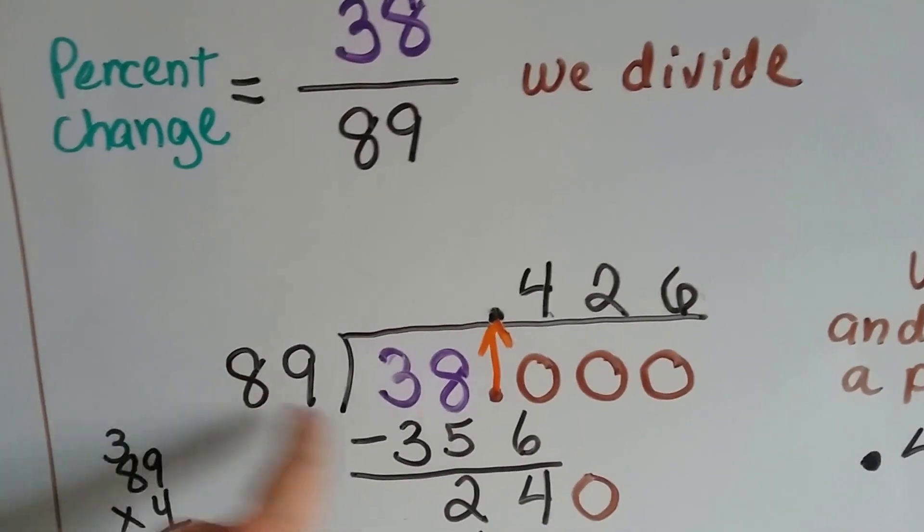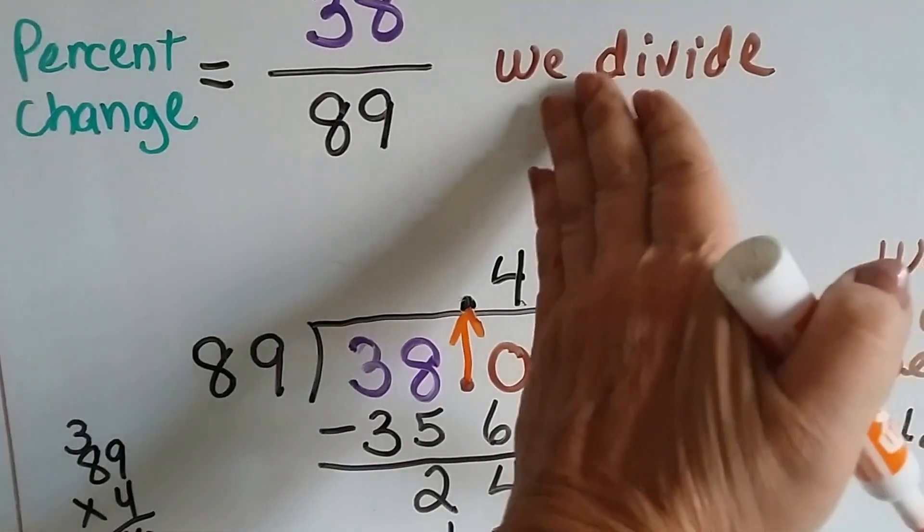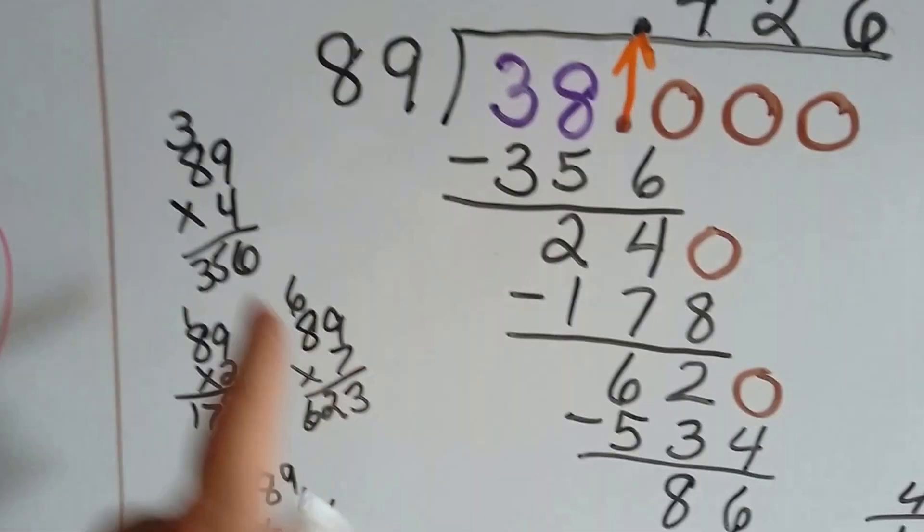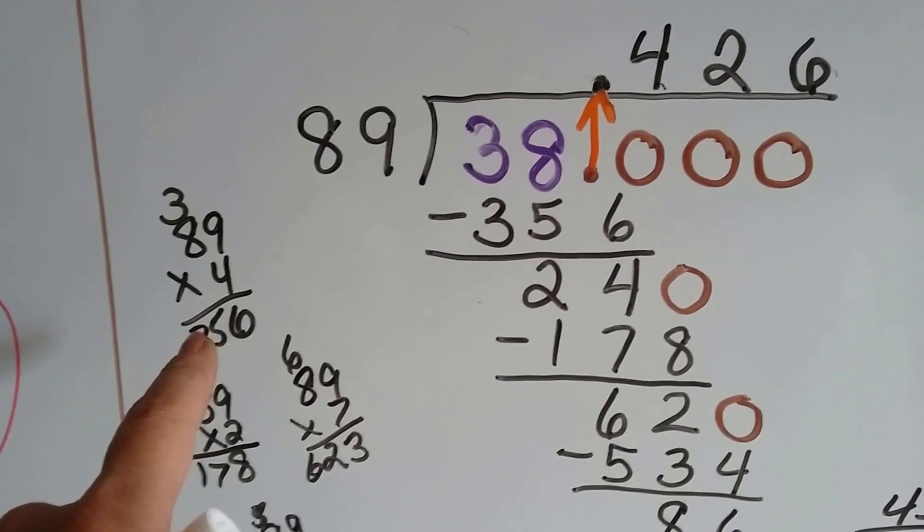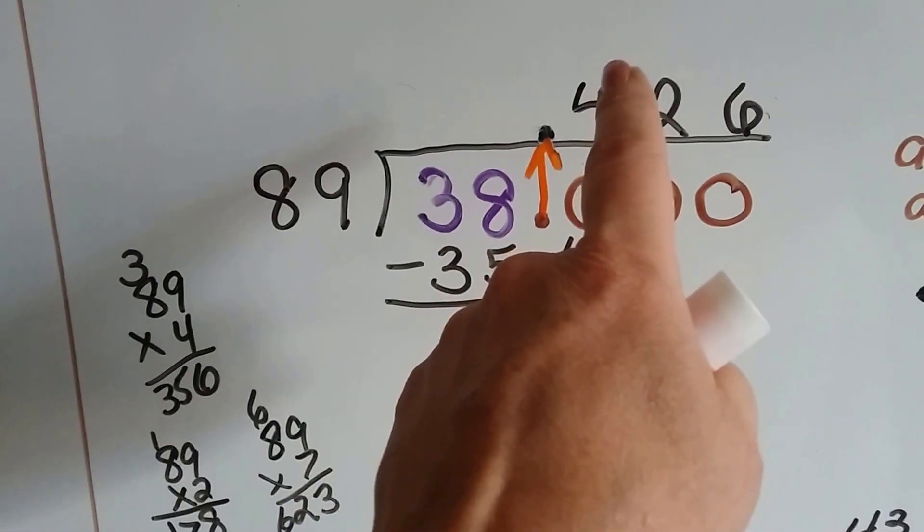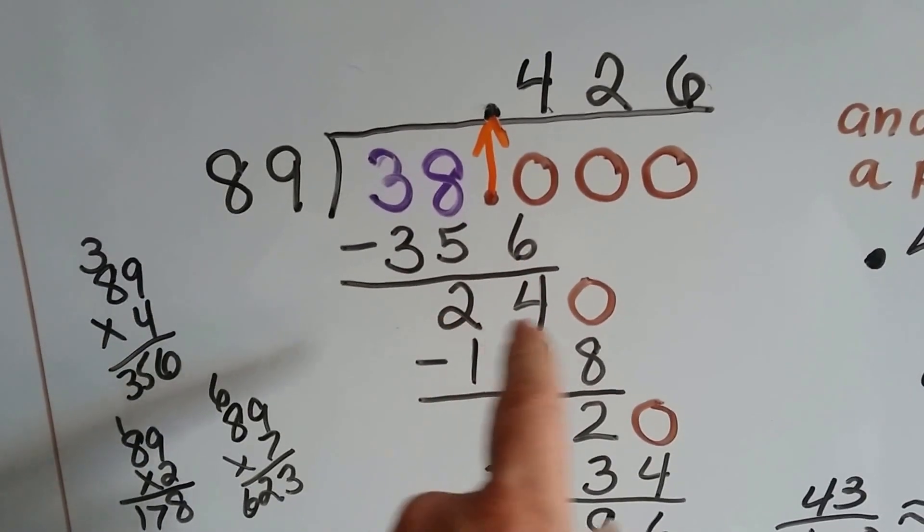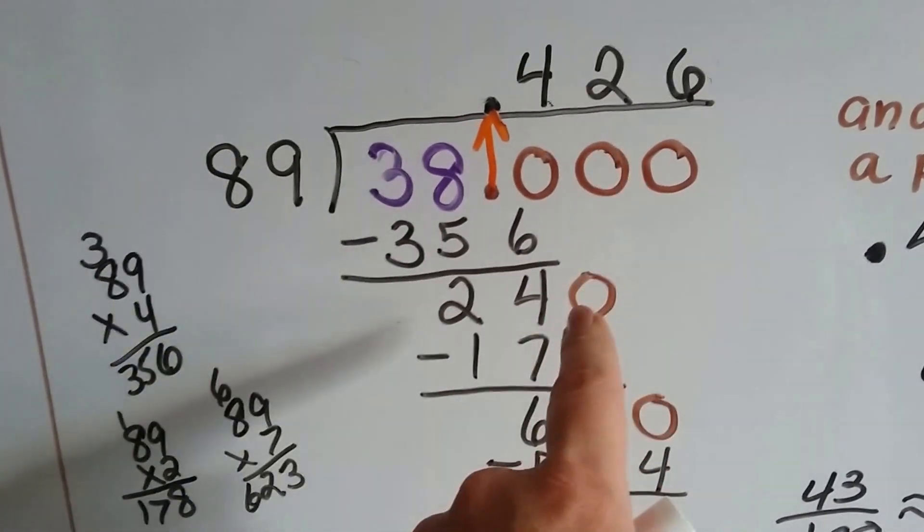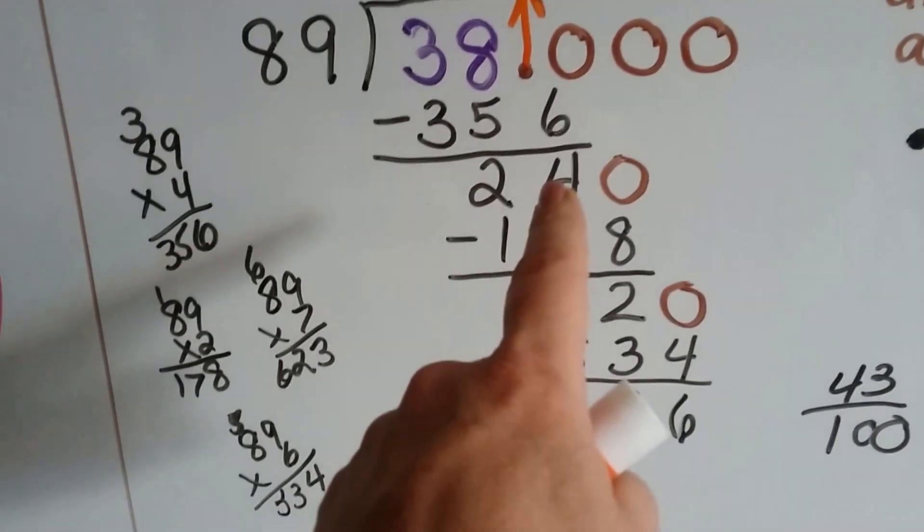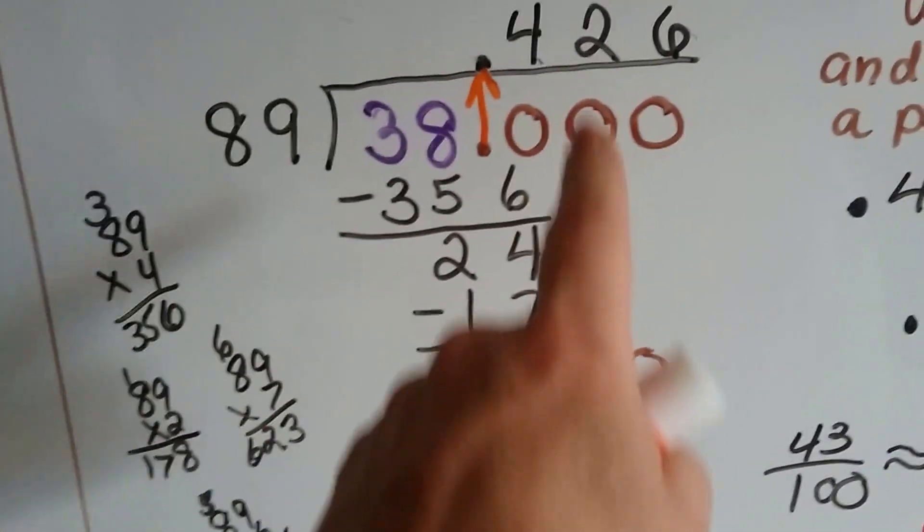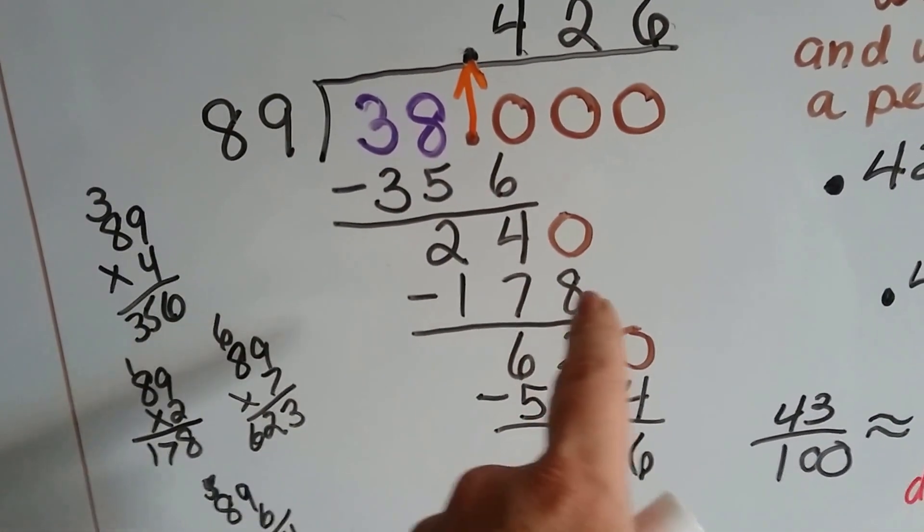We say 89 can't go into 38, but it can go into 380. We do a little math on the side and we can see 89 times 4 is 356. That's just about right. So we put our 4 up here. 89 times 4 is 356. We do our subtraction and get a 24.